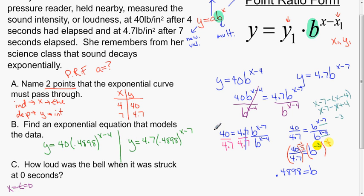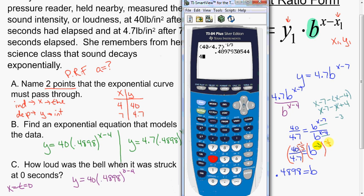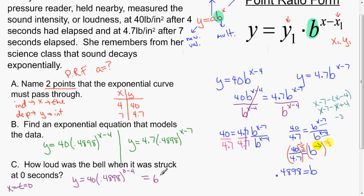I'm going to plug it in for the first one where it goes y equals 40 times 0.4898 to the 0 minus 4. This is saying that the intensity of the bell looks to be about 695 pounds per square inch.